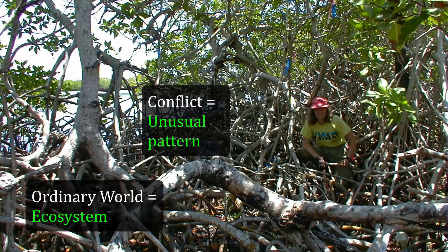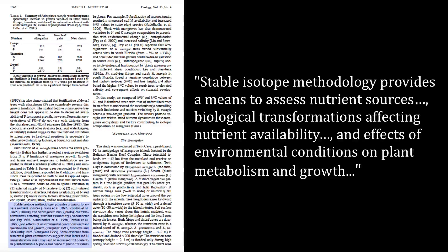Why weren't all the trees — a single species — limited by the same nutrient? In writing the introduction, we described this ordinary world, introduced the conflict or mystery pattern, and then summarized how isotopes could be used to figure out what was going on. Stable isotope methodology provides a means to assess: one, nutrient sources; two, biological transformations affecting nutrient availability; and three, effects of environmental conditions on plant metabolism and growth. These three items foreshadowed the way I would interpret the results in the discussion section.